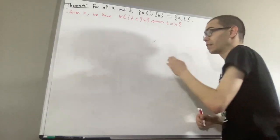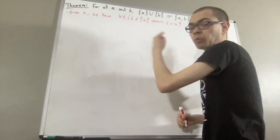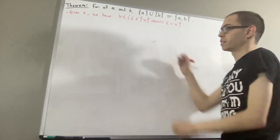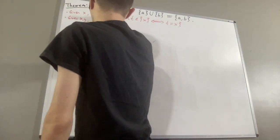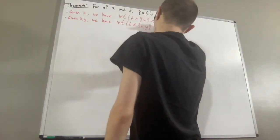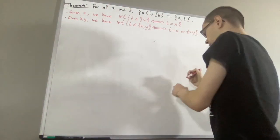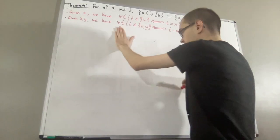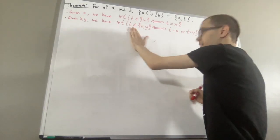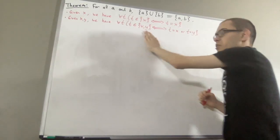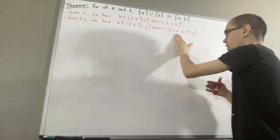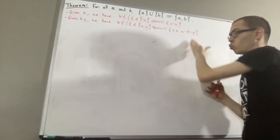Now, given objects X and Y, the pairset of X and Y satisfies the following property: for all T, T is an element of the pairset of X and Y if and only if T is equal to X or T is equal to Y.